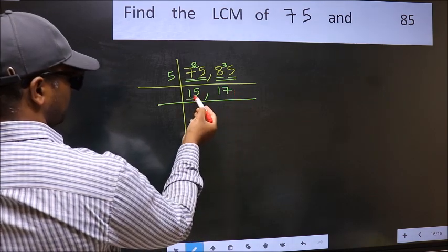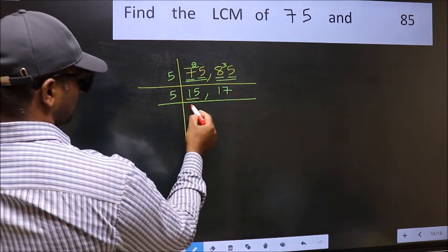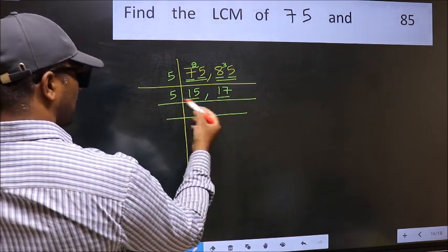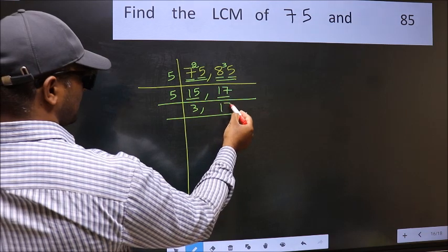Now here we have 15. 15 is 5 times 3. The other number, 17, not divisible by 5, so you write it down as it is.